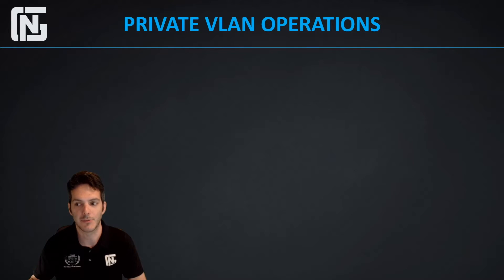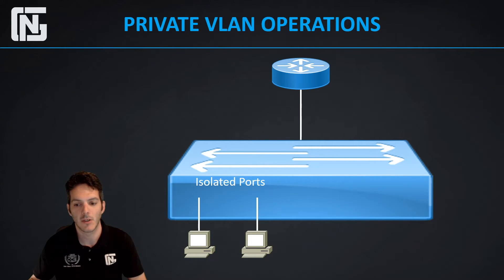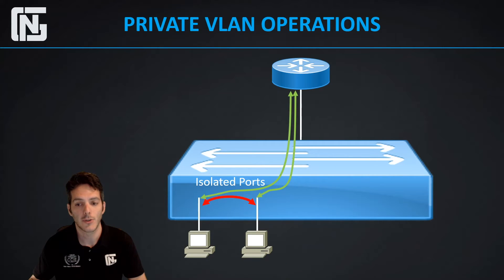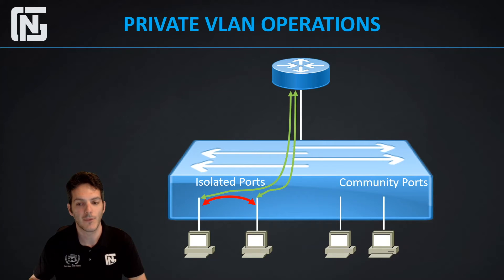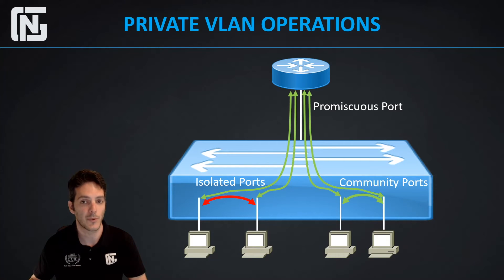Let's take a look at exactly how this comes into play. We have a switch with isolated ports — we created an isolated VLAN, defined it, gave it a number, and placed two hosts inside of it. Traffic between those ports will not be able to communicate with one another. However, if those devices need to talk outside of the network, they can do so via the promiscuous port. Community ports are allowed to talk to each other and can also reach the outside world via the promiscuous port. It's really not very complicated once you start diving into how it all works.